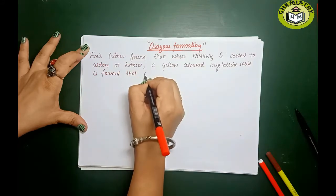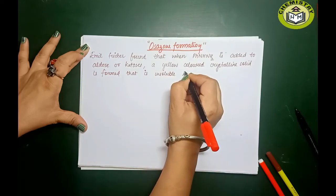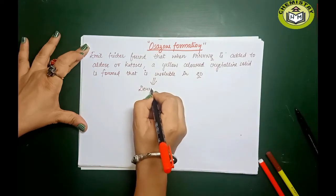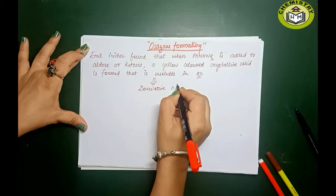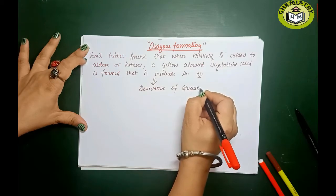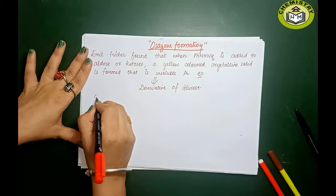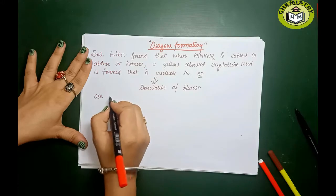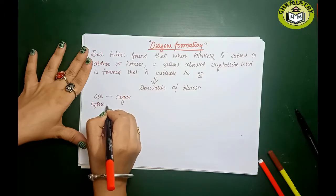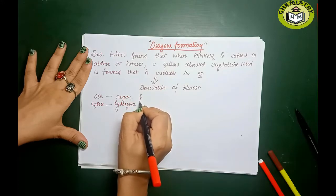This yellow colored crystalline solid is insoluble in water and is known as a derivative — for example, if you are taking glucose, it is a derivative of glucose. The term 'osazone': osa means sugar and zone means hydrazine.